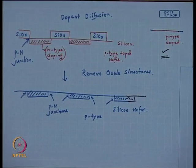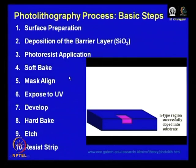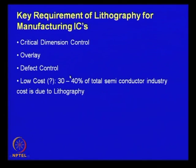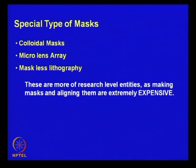This concludes our discussion on photolithography. Some key requirements of lithography for manufacturing integrated circuits are: critical dimension control, overlay, defect control, and cost — 30 to 40 percent of the total semiconductor industry cost is due to the process of lithography. Next we will discuss some novel aspects of photolithography more associated with research, which are at the research level but have potential. Three topics: colloidal mask, microlens array, and maskless lithography.